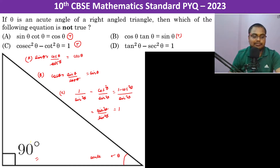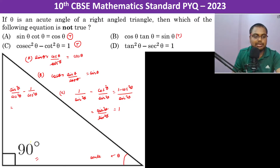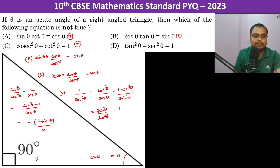Now for the last option: tan²θ minus sec²θ. This becomes sin²θ over cos²θ minus 1 over cos²θ, which equals sin²θ minus 1 divided by cos²θ. Since sin²θ minus 1 equals negative cos²θ, this simplifies to negative 1. So this equation equals negative 1, which makes it false.